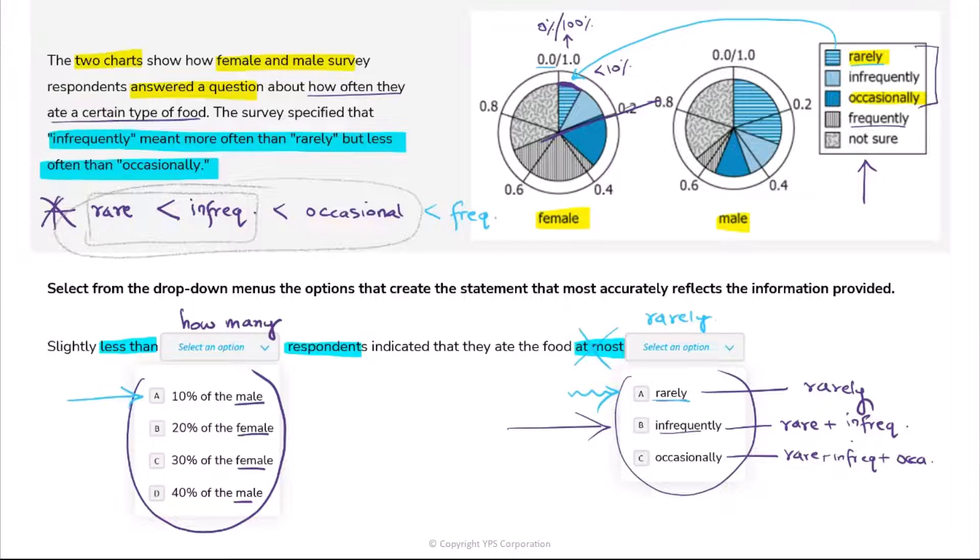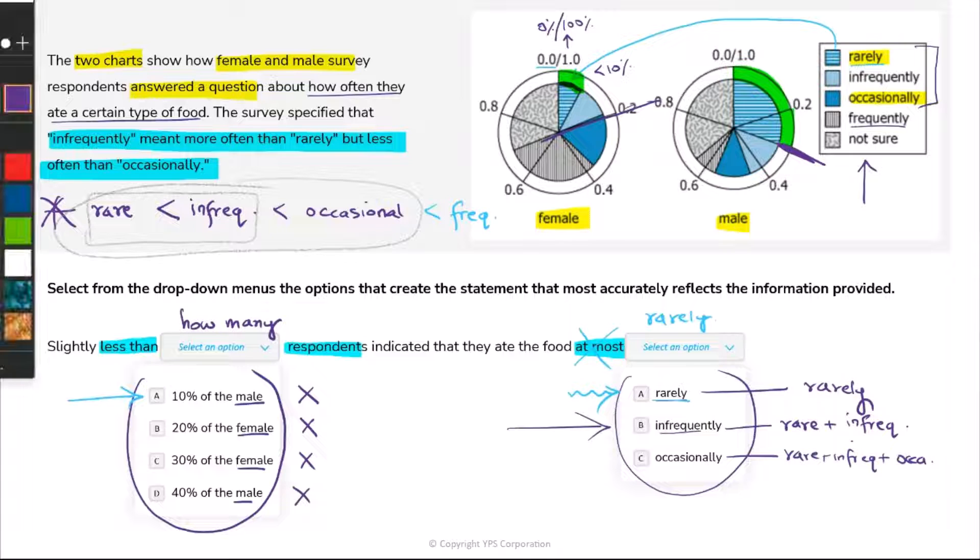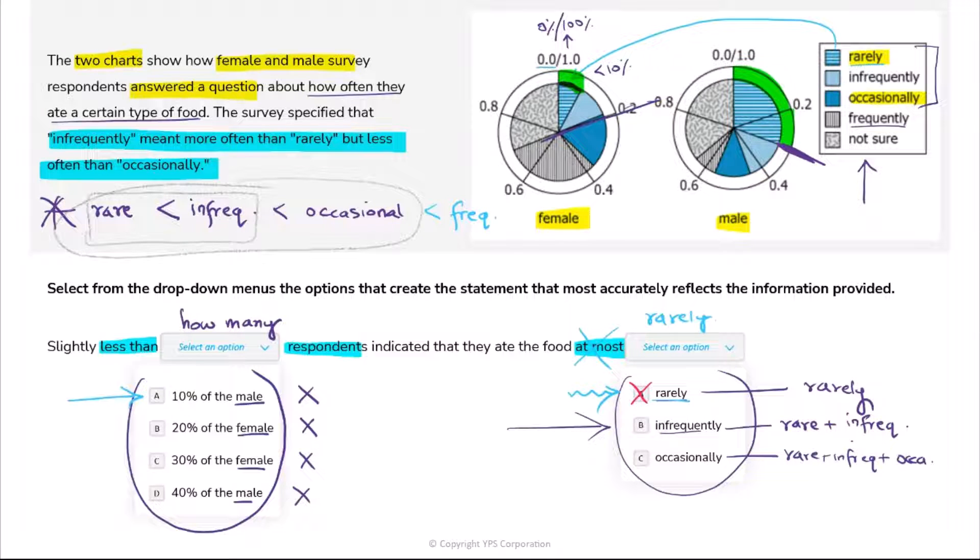Now look at the choices. Slightly less than 10% of male - let's see if that really happened. So if I try to find 10% of male and I see rarely - rarely is this, right, the horizontal lines - it's more than even 20%, this seems to be 30%. So if my second blank is rarely, then 10% of male is not the answer. Then you see 20% of female - again, you're only looking at rarely - is this 20%? No, this is less than 10%. 30% of female - out for the same reason. 40% of the male - no, we just saw it was about 30%. So all of the choices are rejected if rarely is the answer for the second blank.